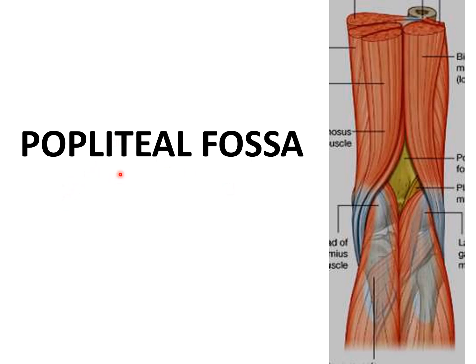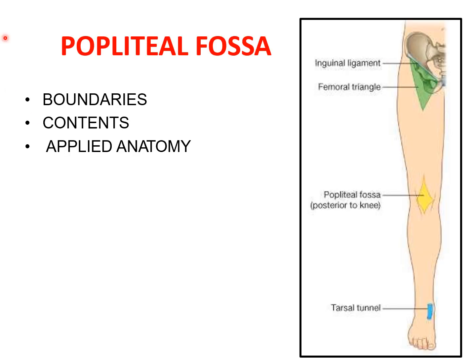Good morning dear students. Today we are going to discuss the popliteal fossa. Popliteal fossa is a diamond-shaped space behind the knee, and it becomes apparent as a depression in the flexed knee. When you flex your knee, the popliteal fossa becomes more clear and visible behind the knee. We shall see the boundaries, the contents, and the applied anatomy of the popliteal fossa.